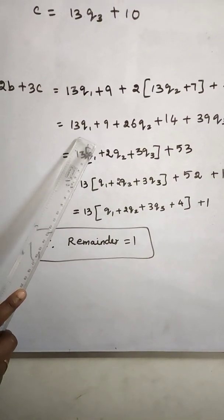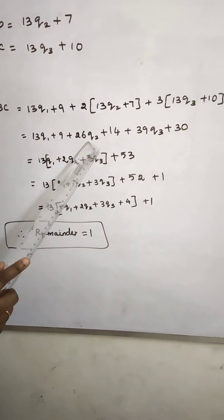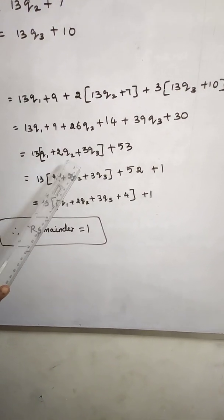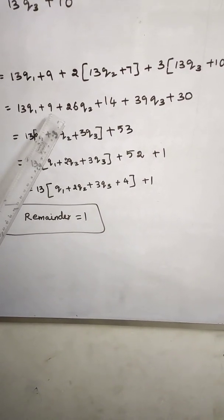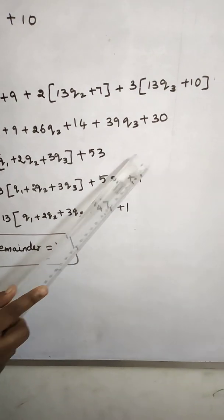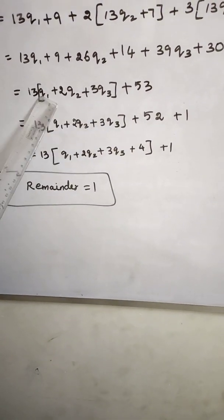First, group the Q terms. 13Q1 plus 2 into 13 is 26Q2 plus 39Q3. Constants add: 9 plus 14 plus 30 is equal to 53. So again, this is a multiple of 13. This is a multiple of 13.